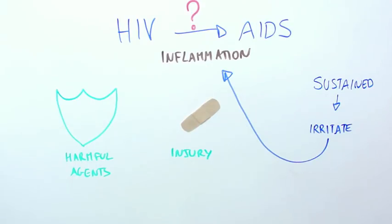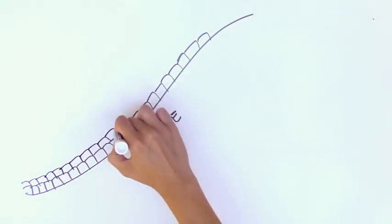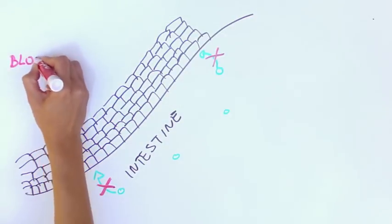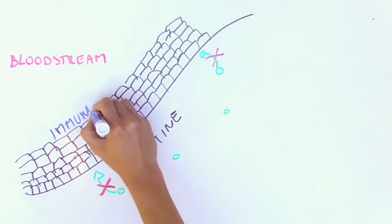So where could this inflammation come from? One interesting theory points to the gut. The wall of our intestine protects us by preventing harmful substances in our intestine from entering the bloodstream. A sea of immune cells prevents this from happening.